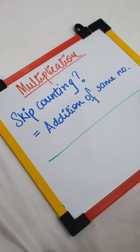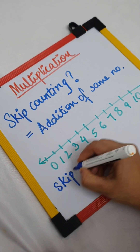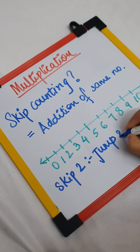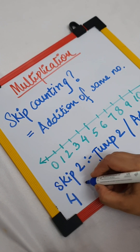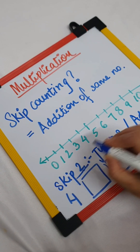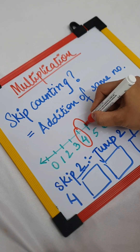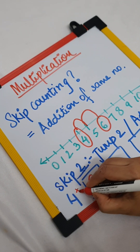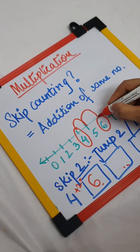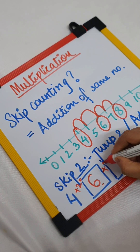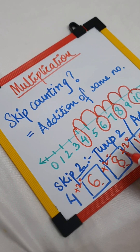Let us see with the help of a number line what skip counting is. If I say let's skip count 2, that means jump 2 times or add 2. So if I give the number 4 and you have to skip count 2, I go to number 4 and jump 2 times — I come to number 6. That means 4 plus 2 is 6. Now at number 6, skip count 2 again: I come to 8, that means 6 plus 2 is 8. And 8 plus 2 is 10. So skip counting 2 means add 2, means jump 2 times.